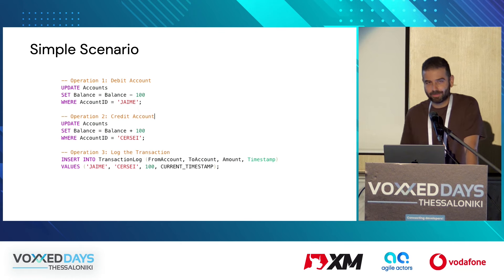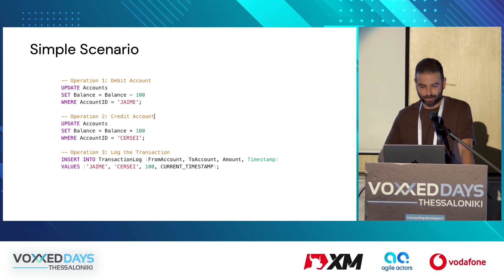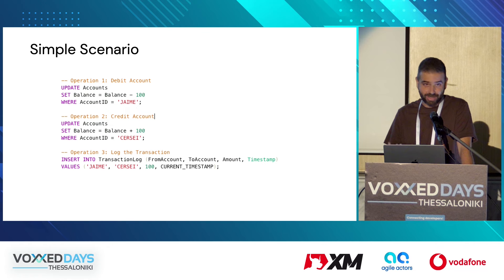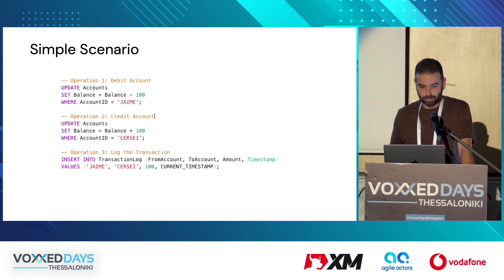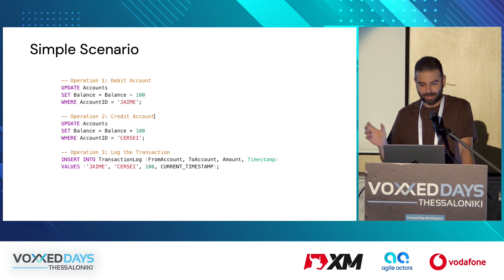If we translate that into an SQL-like pseudo-code query, we have: first, update Jamie's account balance by removing 100 coins; second, add that amount to Cersei's account balance; third, write a record to the database table that the transfer has been done.